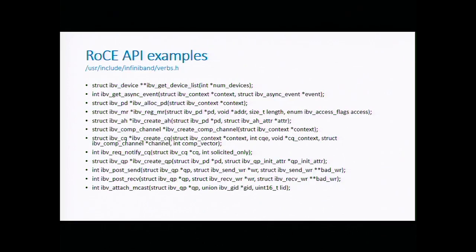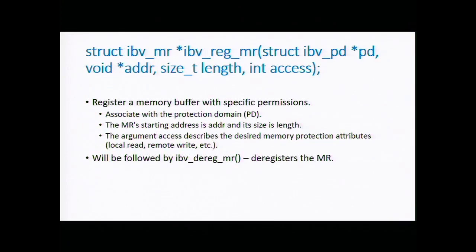Let's look at some APIs, or as we call them, verbs. You can find them under user/include/infiniband/verbs.h after building with OFED. One example is ibv_reg_mr — InfiniBand Verbs Register Memory Region. This function pins a memory region for later use by the hardware. It accepts the protection domain, which connects the memory region to a specific QP or queue, along with the address, length, and access flags for security. Each ibv_reg_mr call should be followed by a corresponding deregistration to free that pinned memory.